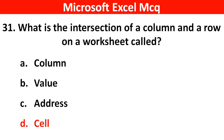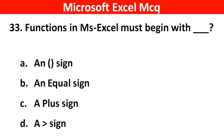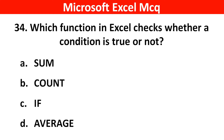Next question: Which one is not a function in MS Excel? Right answer is Option B: Average. Next question: Functions in MS Excel must begin with dash dash. Right answer is Option B: An equals sign. Next question: Which function in Excel checks whether a condition is true or not? Right answer is Option C: IF.